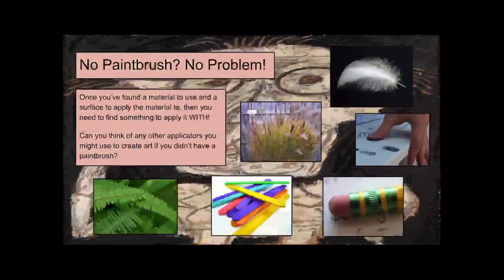No paintbrush? No problem. Once you've found a material to use and a surface to apply it to, then you need to find something to apply it with. Can you think of any applicators you might use if you didn't have a paintbrush? Maybe you're going to spread some paint with a feather, put charcoal on your fingers and make fingerprints, spread some coffee with grasses or a leaf you find outside, or spread some mud with a popsicle stick or the end of an eraser. Think about making repetitive marks on your page and using the theme of peace.